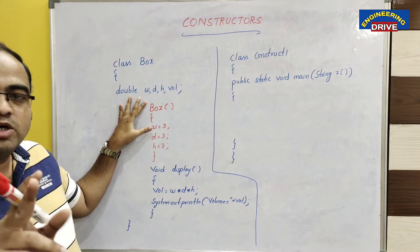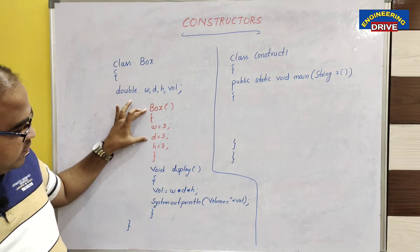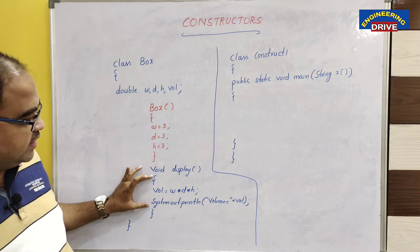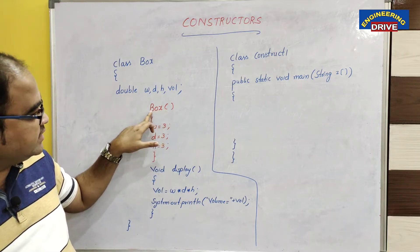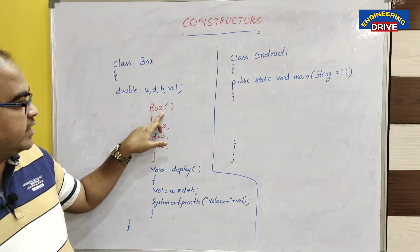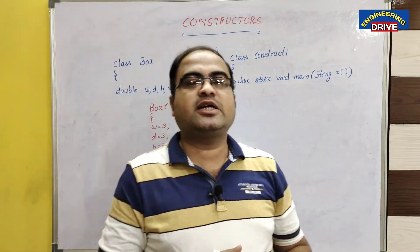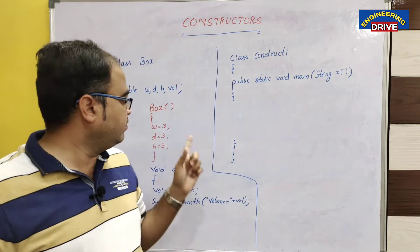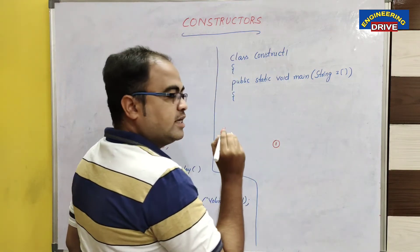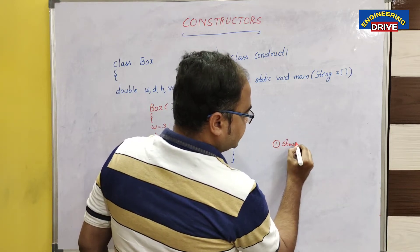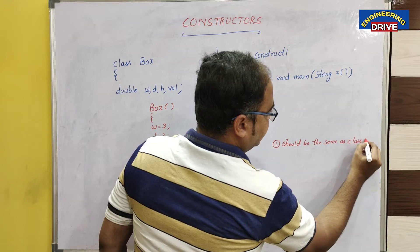In this class you can see two types of methods. One method has the name 'box' and another method is named 'display'. What is the difference between them? This method 'display' is a normal method, whereas 'box' is a special method. Why is it special? The name of this method is exactly the same as the class name — B-O-X, both starting with a capital letter. This is a constructor. A constructor is a special method in Java whose name is exactly the same as the class name.